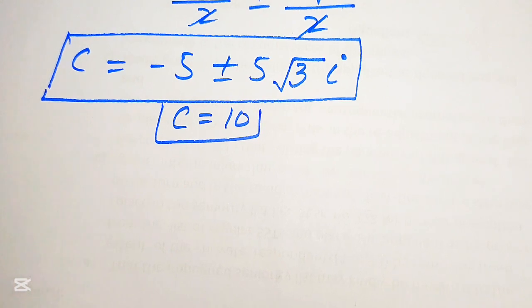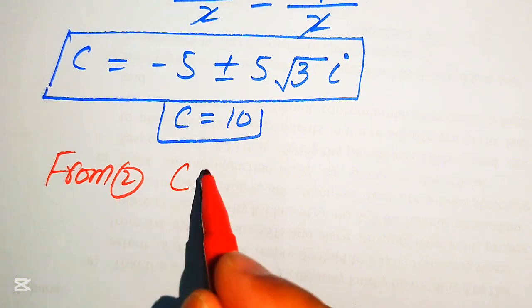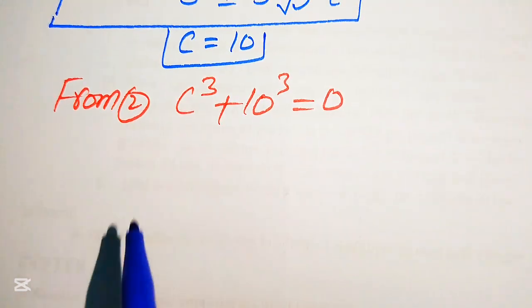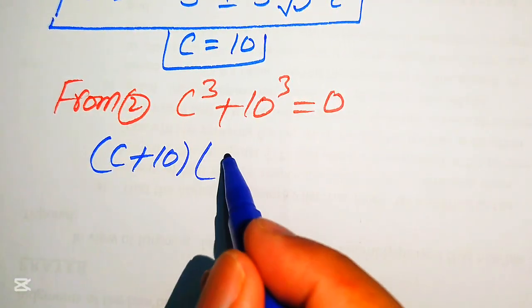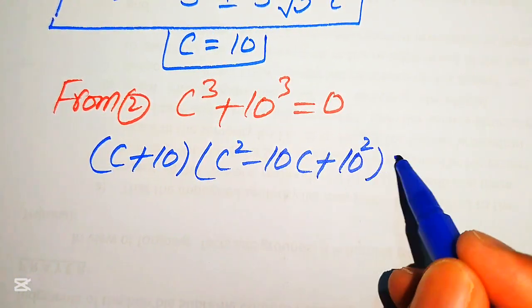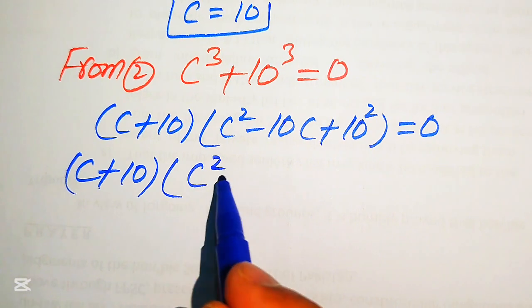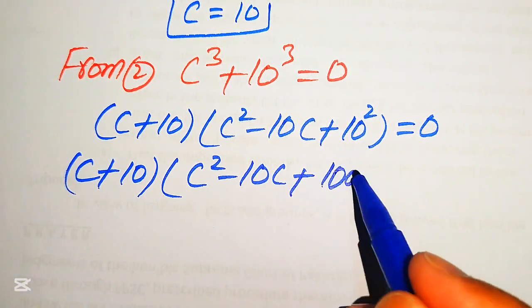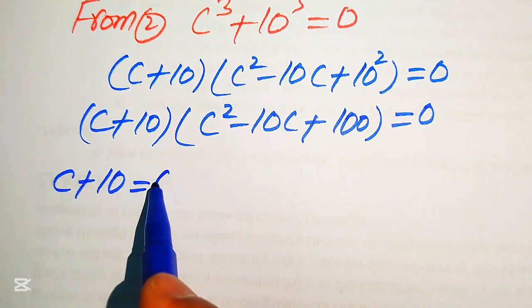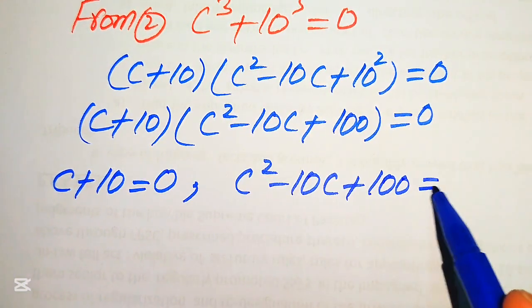Now to find the other roots, we work with equation number 2: C cubed plus 10 cubed equals 0. Applying the sum of cubes formula, we write this as C plus 10 times C squared minus 10C plus 10 squared equals 0, which simplifies to C plus 10 times C squared minus 10C plus 100 equals 0. We split into two cases: C plus 10 equals 0, and C squared minus 10C plus 100 equals 0.